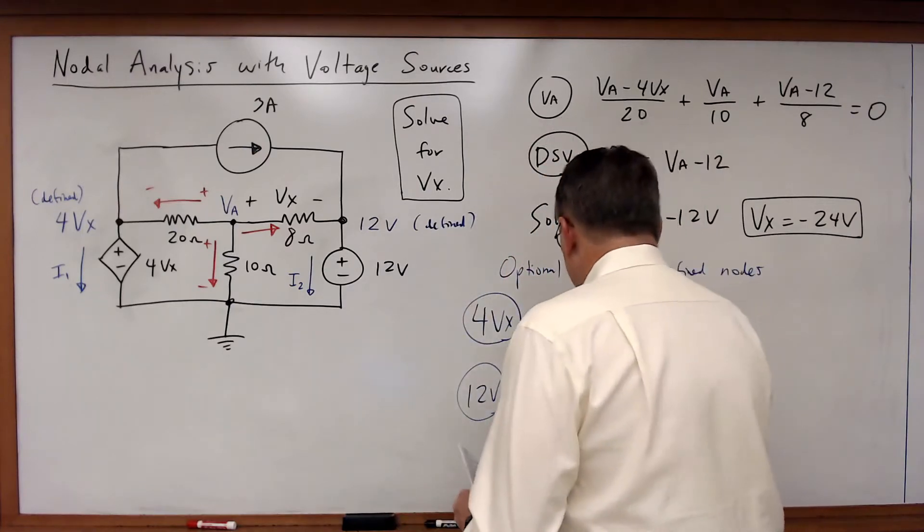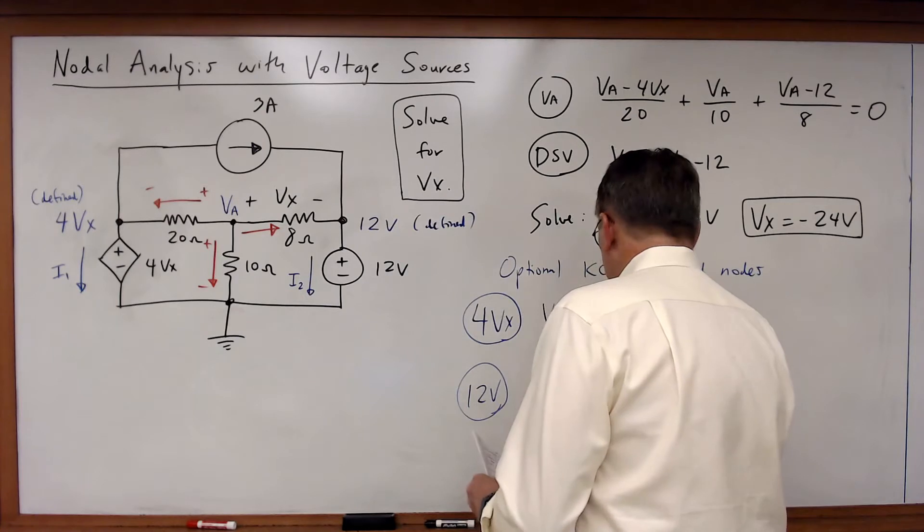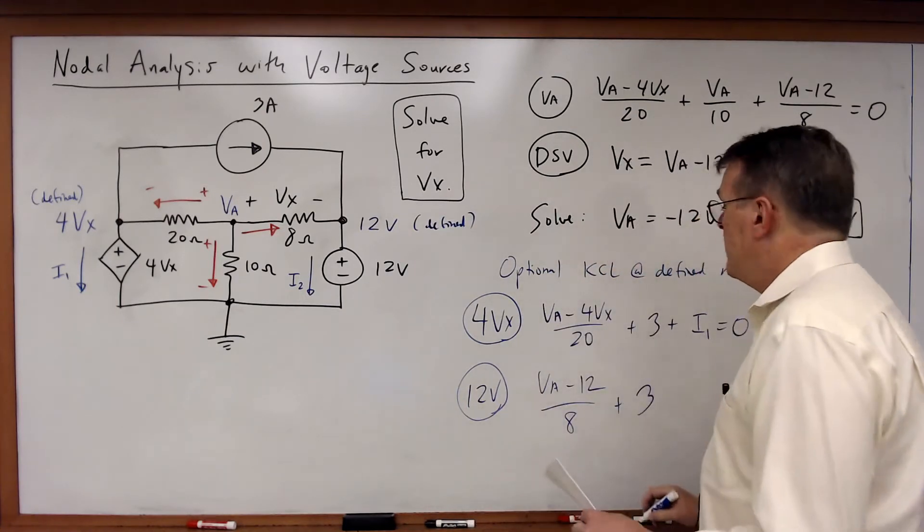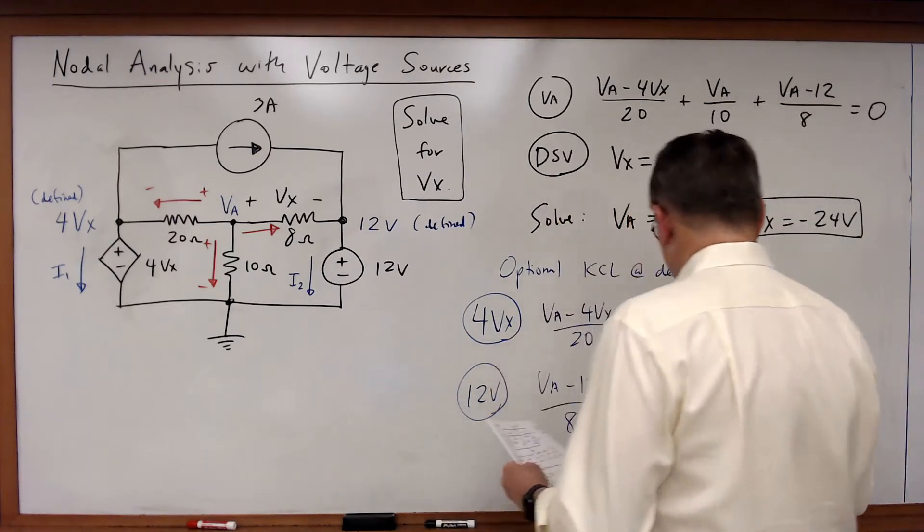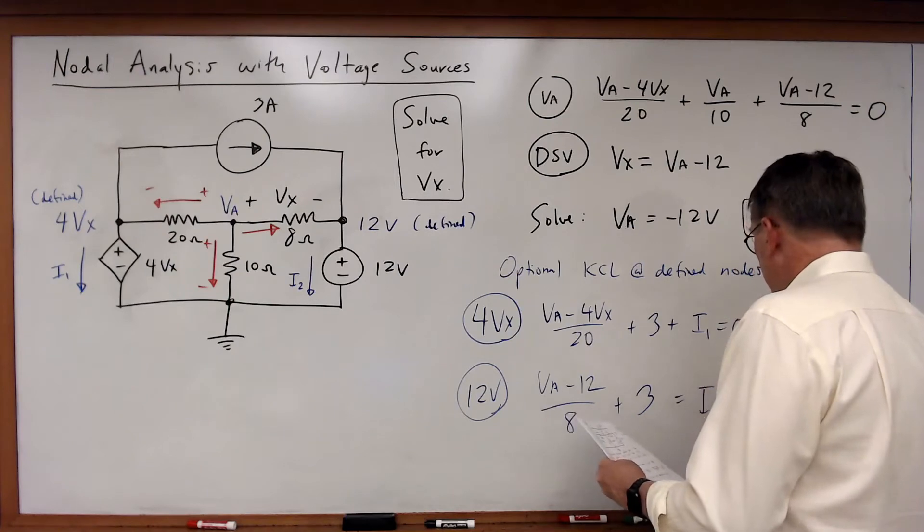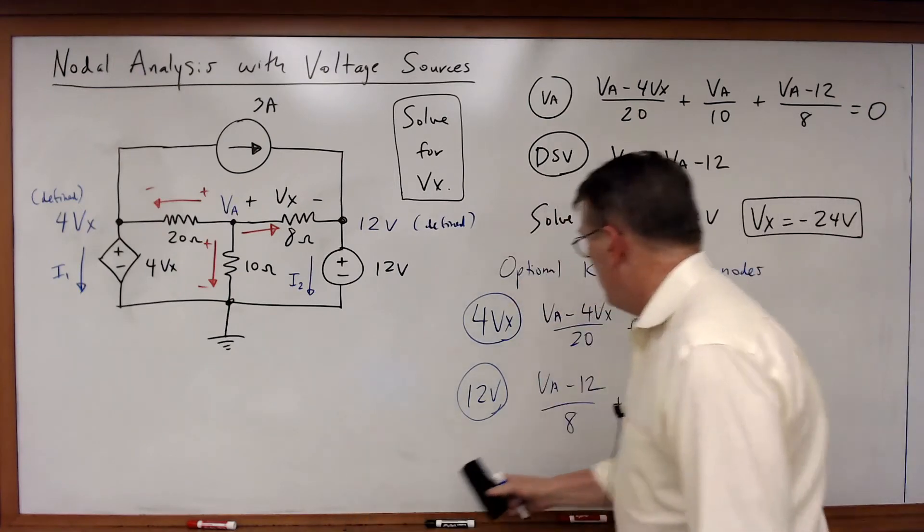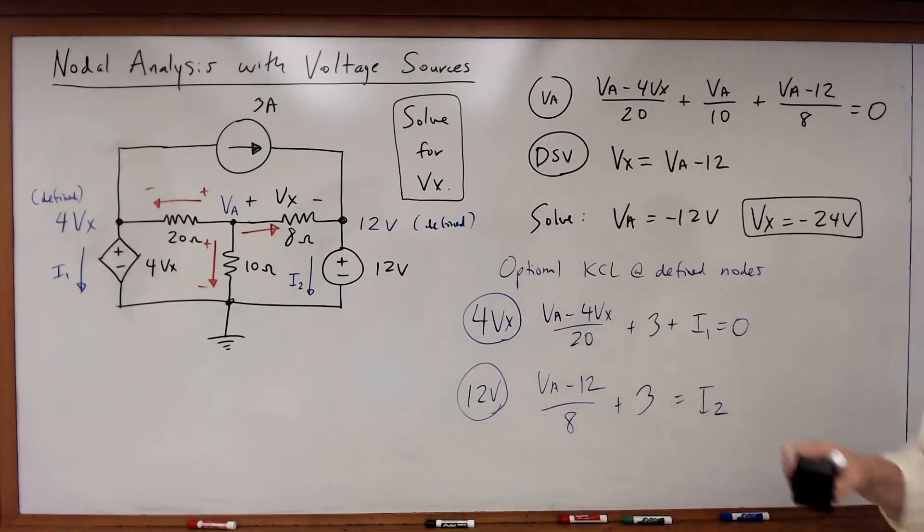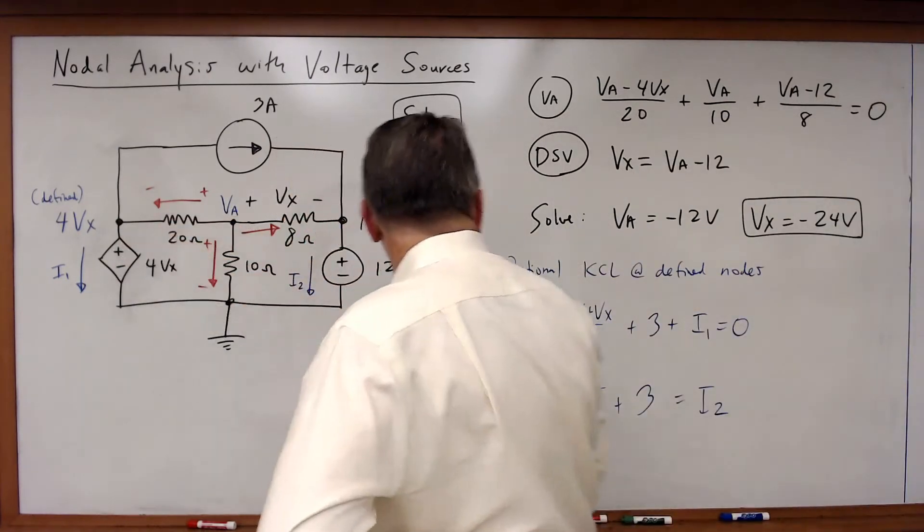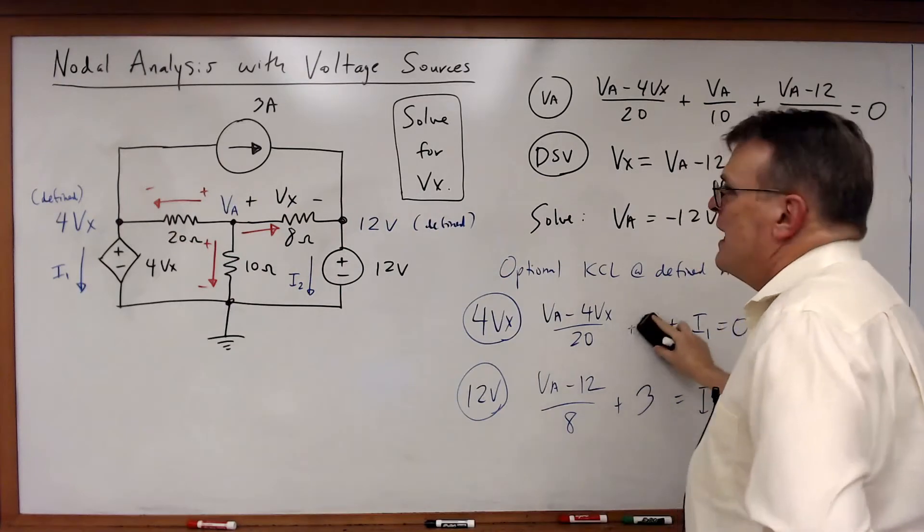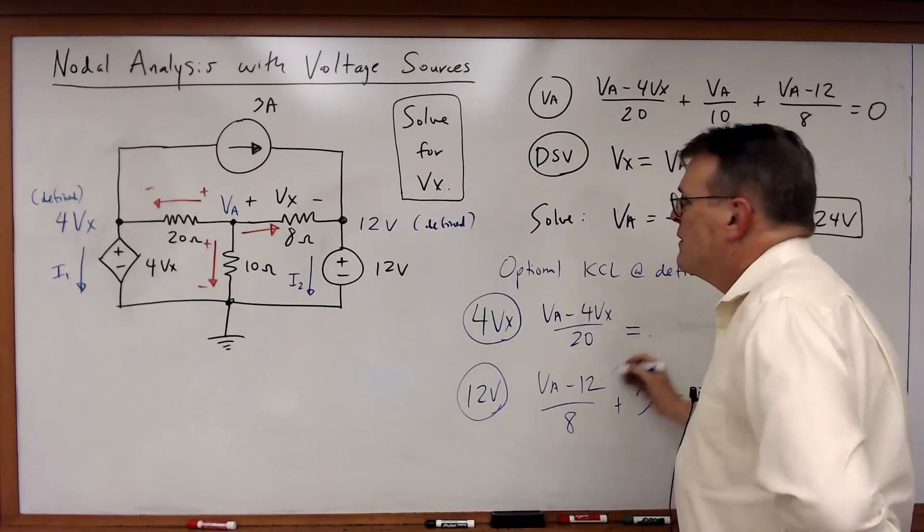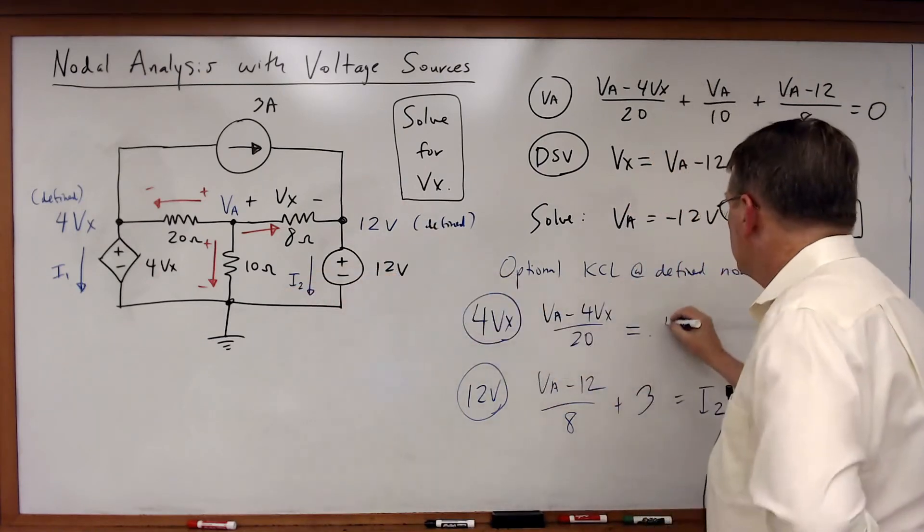What about the 12 volt node? For the 12 volt node (VA - 12)/8 + 3 going in must be equal to I2 going out. And you know what, I just realized I made a mistake on that 4Vx equation. (VA - 4Vx)/20 = I1 + 3 amps. See how easy it is to make those kinds of mistakes, very common. So here you see how just not looking, not thinking what goes in must come out, always double check your equation.